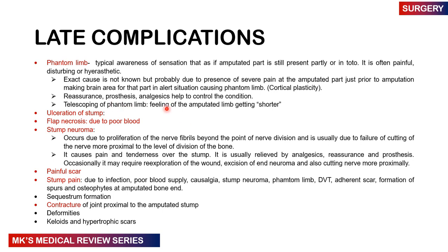Telescoping of the phantom limb is the sensation that the amputated limb is getting shorter. Other late complications include ulceration of the stump, flap necrosis due to poor blood supply, and stump neuroma — a proliferation of nerve endings and nerve fibrils beyond the point of nerve division, usually because the nerve was not cut sufficiently proximal to the bone division. This causes pain and tenderness over the stump, managed with analgesics, reassurance, prosthesis, and occasionally re-exploration with excision of the neuroma and proximal nerve resection.